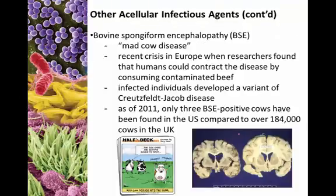The one most people are familiar with is bovine spongiform encephalopathy, or BSE, commonly known as mad cow disease, which is also caused by a prion. There has been a recent crisis in Europe where researchers found that humans could actually contract the disease by consuming contaminated beef. The issue is that cooking the beef does not get rid of the prion — prions are extremely resilient and harder to kill than bacteria.